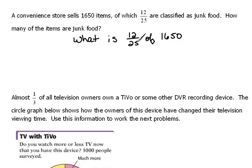What does 'of' mean? Of means multiply. So I can rewrite this as 12/25 times 1650. Because that's a whole number, we can put it over 1 so we can see the numerator and denominator.